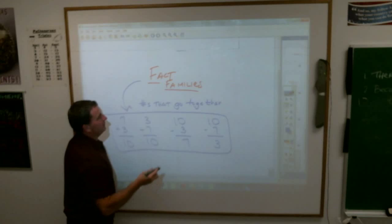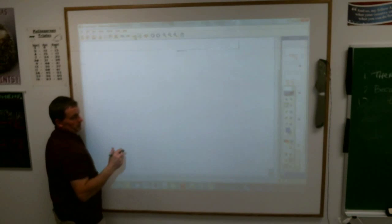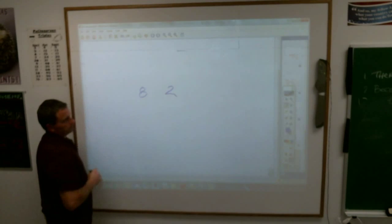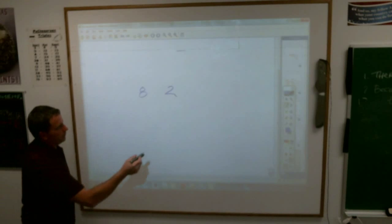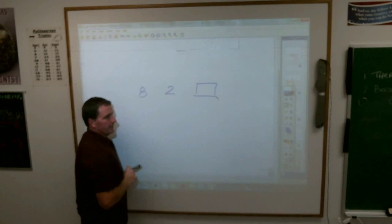Now let's play a little game here. If I gave you two of the three numbers, let's say I gave you 8 and 2. What do you think would be a third number that would go with 8 and 2 to form a fact family?